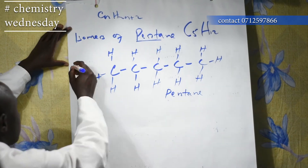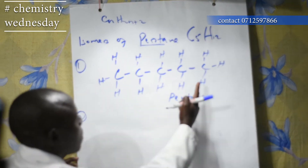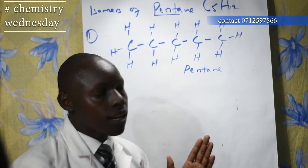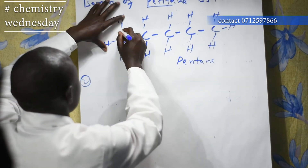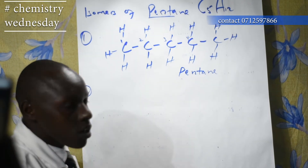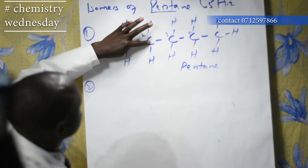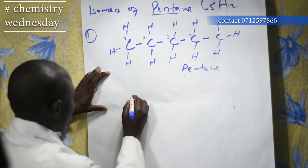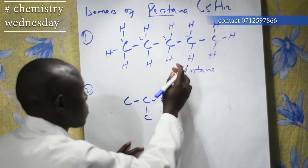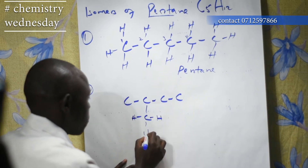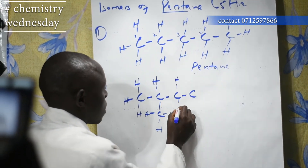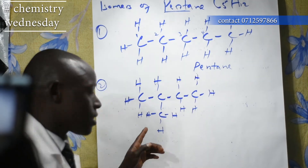This is isomer number 1. Isomer number 2: you take the last carbon and put it on one of the middle carbon atoms. So from 1, 2, 3, 4, you take the last carbon and bring it to carbon number 2. So you have a longest chain of 1, 2, 3, 4 and then a branch at carbon number 2 — a CH3 branch. The rest of the bonds are filled with hydrogen.